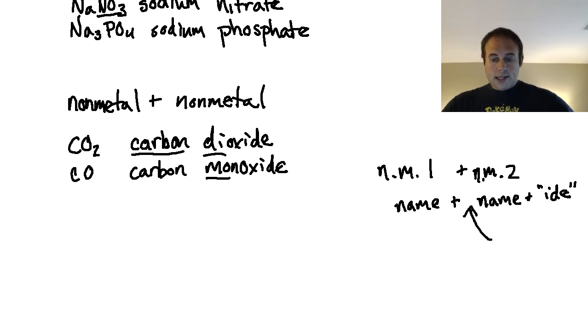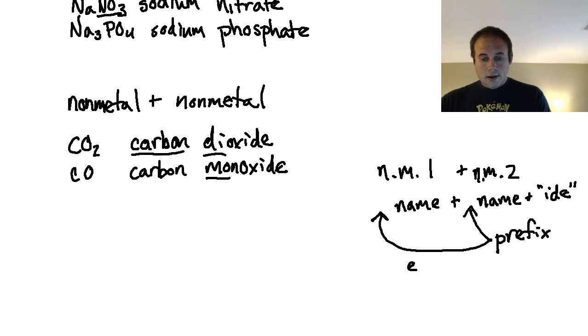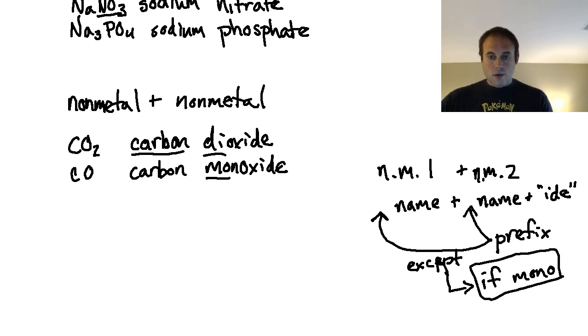One of the things we need to keep in mind is that we will always insert a prefix based on the number. Whenever I'm getting ready to work with this, I need to add a prefix in front of the second nonmetal no matter how many there are, even if there's one—I see carbon monoxide here. It turns out you also have a prefix in front of the first name, except if it's mono. So the exception is going to be if it's mono, we do not utilize that. We just say carbon dioxide; we don't call it monocarbon dioxide.